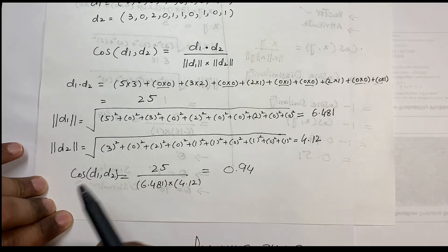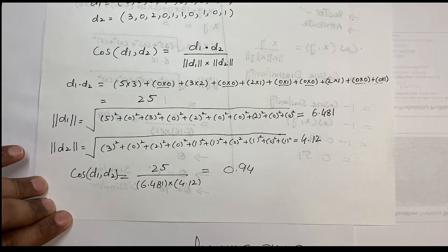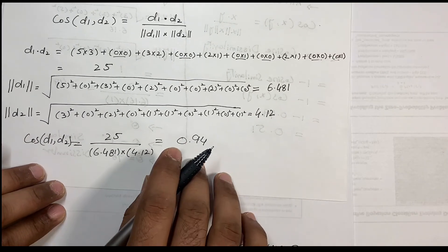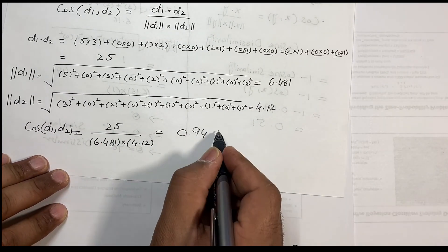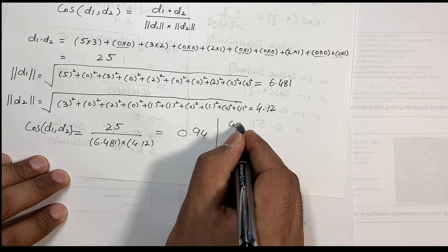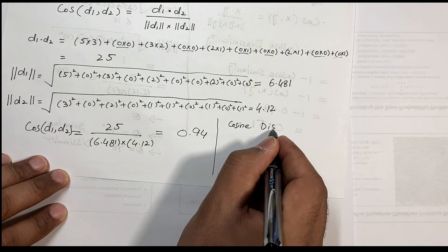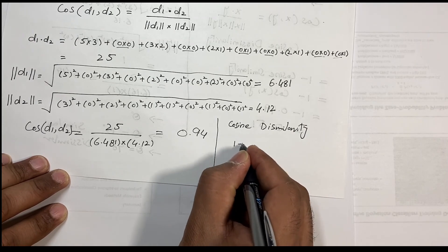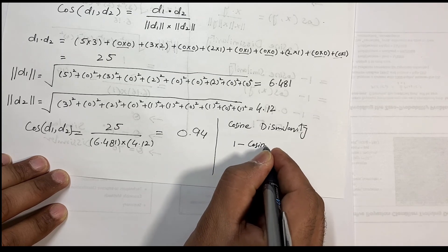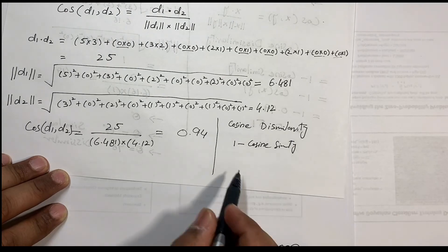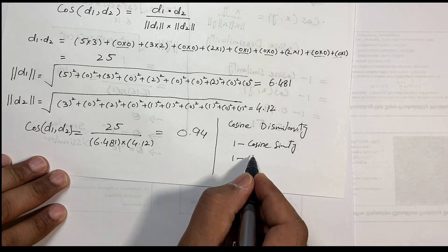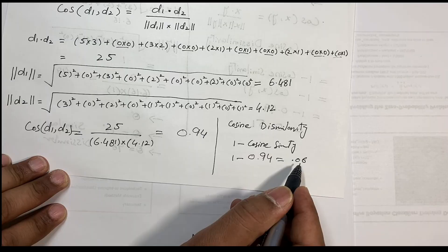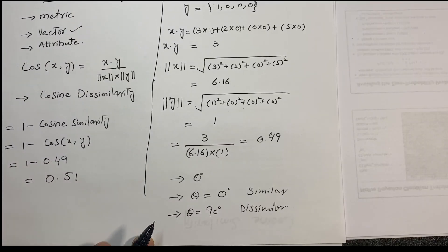So if in an exam you are asked to find both similarity and dissimilarity, use the cosine dissimilarity formula: 1 minus cosine similarity = 1 − 0.94 = 0.06. Thanks for watching this video; I will catch you in the next video.